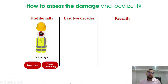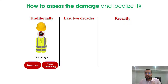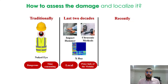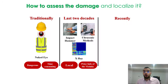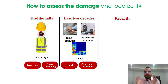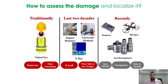Traditionally, to assess damage, consulting companies were sending highly experienced engineers or inspectors to the site to localize damage based on the naked eye, which can be dangerous, time-consuming, and some areas are hampered by demanding access. In the last two decades, there has been use of impact hammers and non-destructive evaluation methods. However, all of these tools are local and require prior knowledge of the vicinity of damage. Recently, thanks to sensors, drones, and accelerometers, the identification of damage is getting better and better.